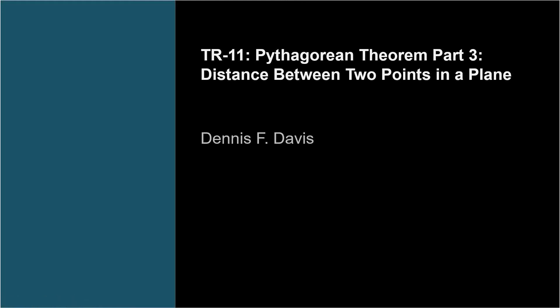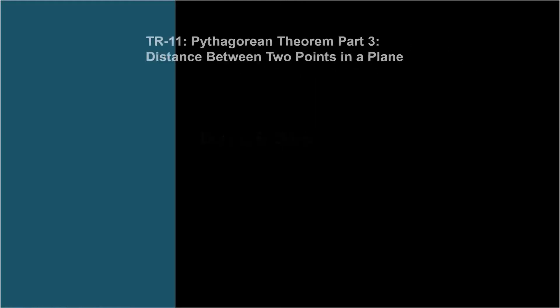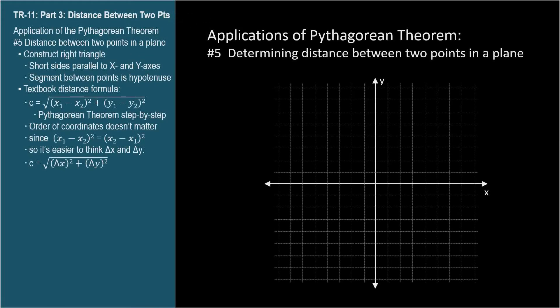We can also use the Pythagorean Theorem to find the distance between any two points on a Cartesian coordinate plane. This is our fifth application of the Pythagorean Theorem.